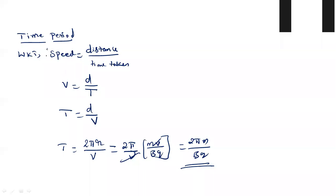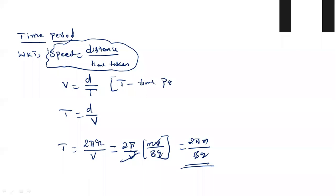Remember, you use the formula: speed equals distance traveled divided by time taken. Time taken equals distance divided by V. Distance traveled in one revolution is 2πR, so T equals 2πR divided by V. Substituting radius MV/BQ, V and V cancel out, giving 2πM divided by BQ as the expression for time period of revolution.